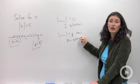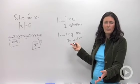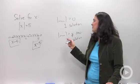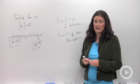Because no number could be a negative distance away from zero. Remember absolute value means distance away from zero. It doesn't make sense to have a negative distance. And that's why sometimes you're going to have no solution.